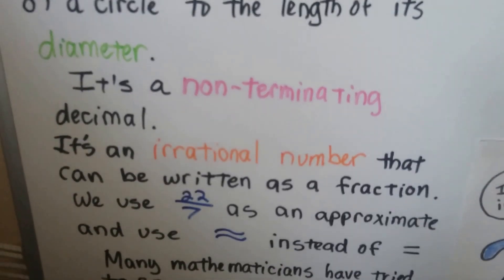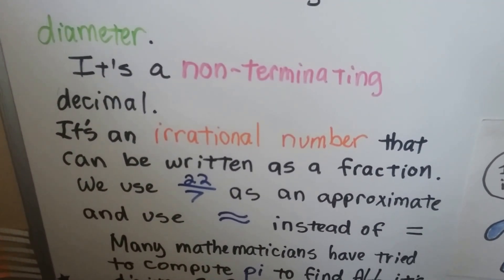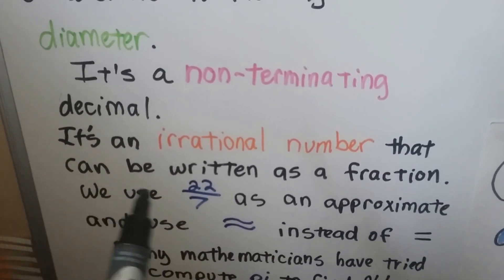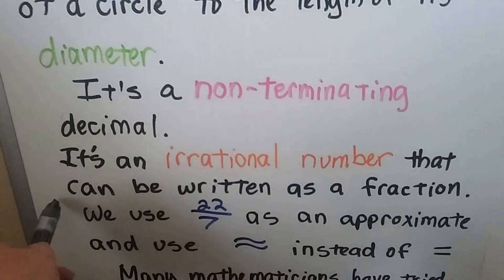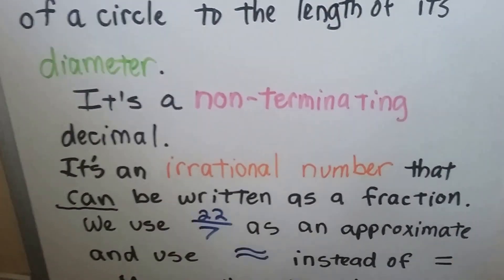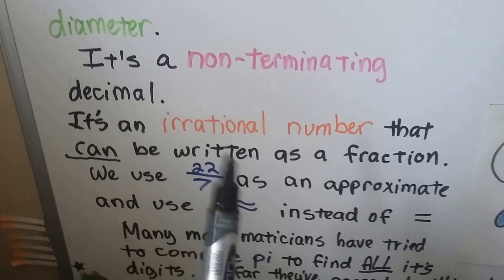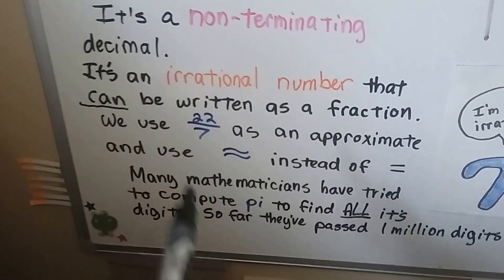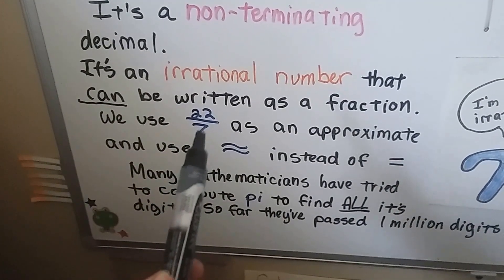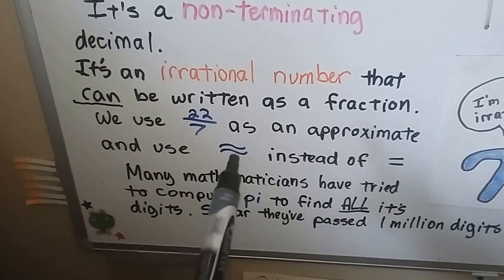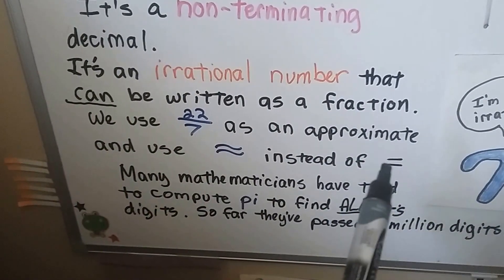Now it's also a non-terminating decimal. It's an irrational number that can't be written as a fraction. Normally we'd say an irrational number can't be written as a fraction, but we can write pi as a fraction because we use 22 sevenths as an approximate and then we use the approximation symbol instead of equals.